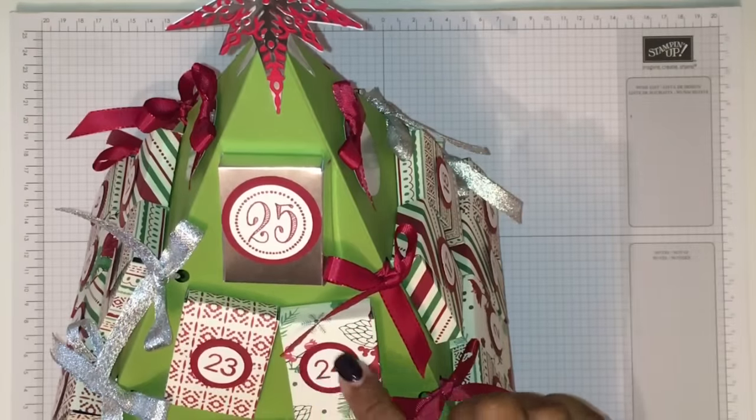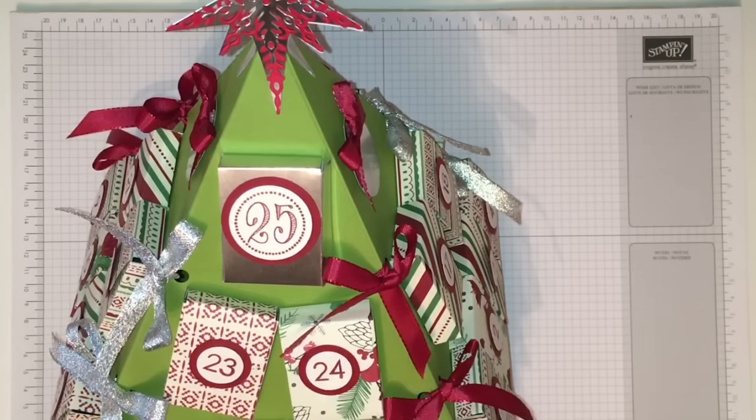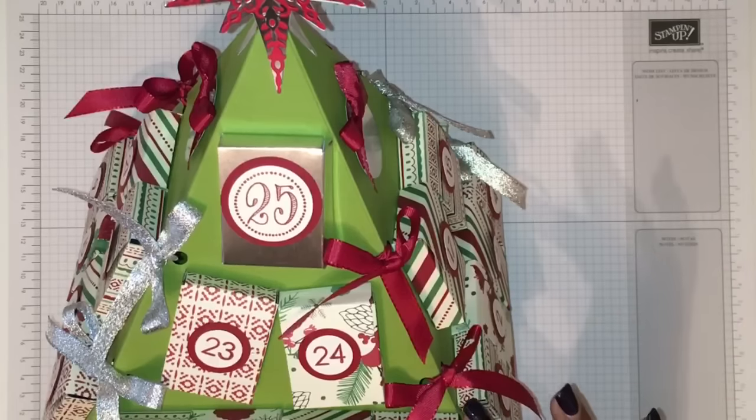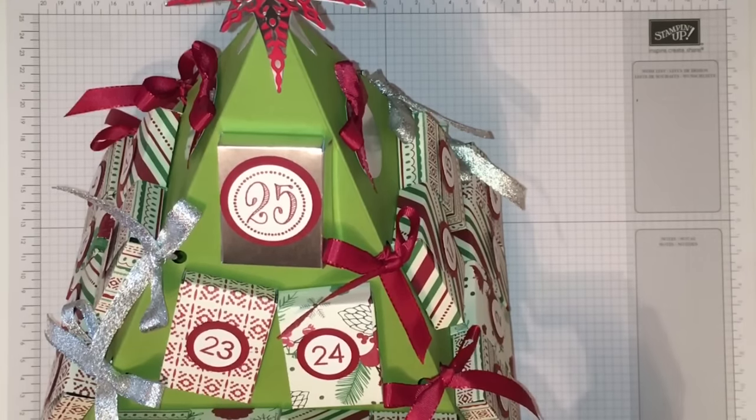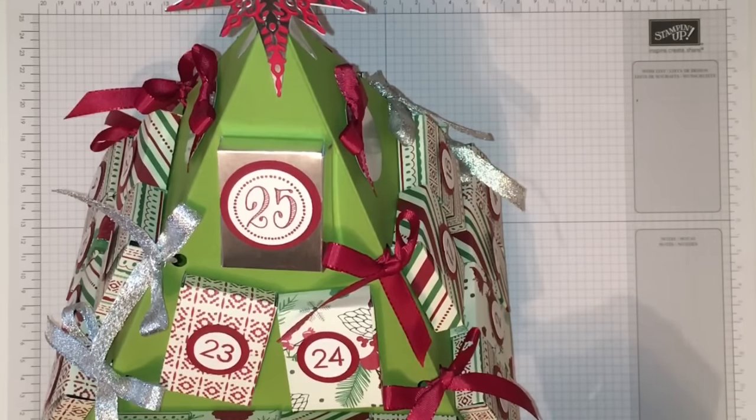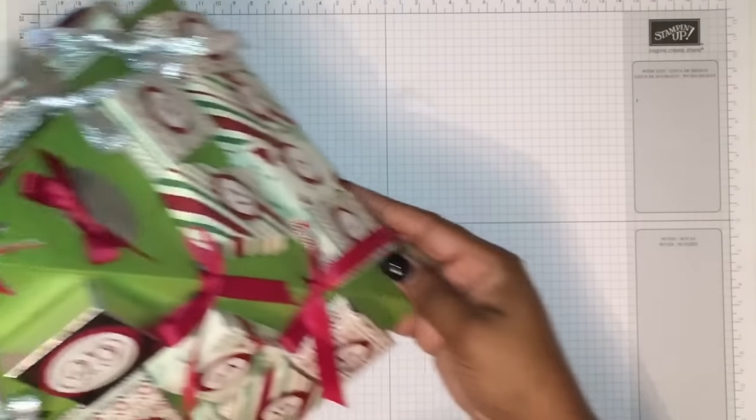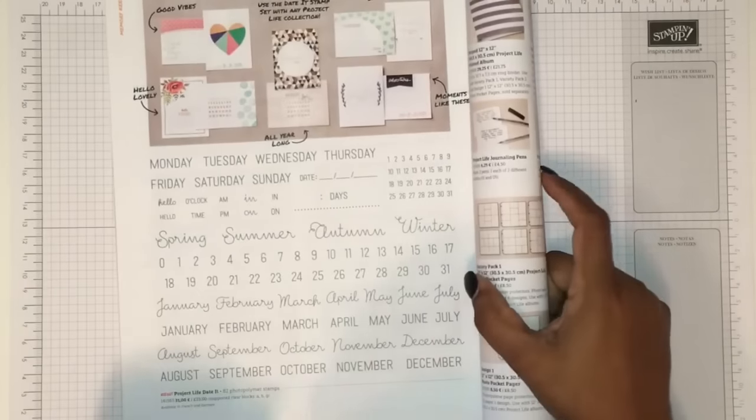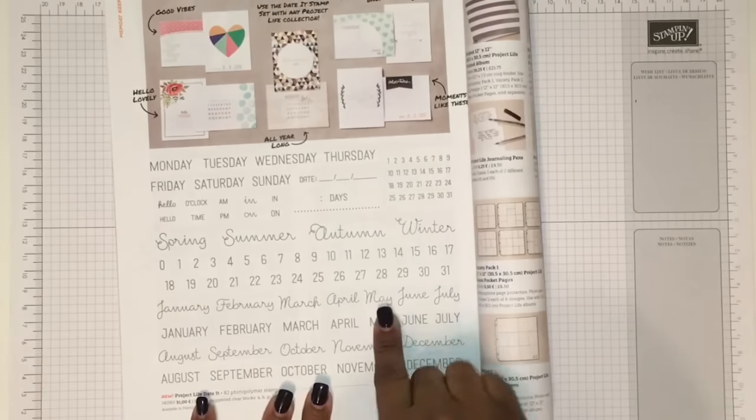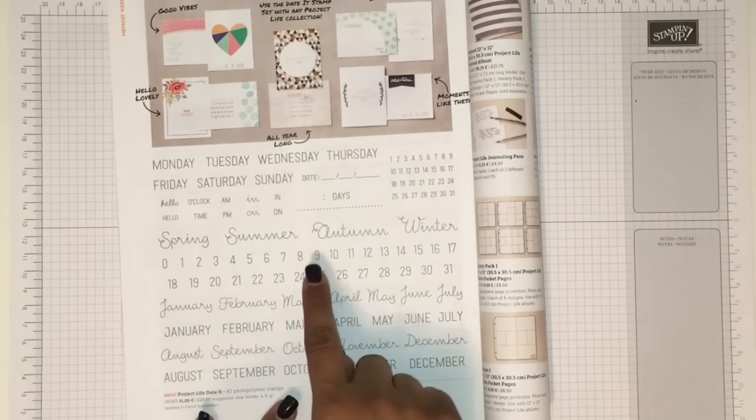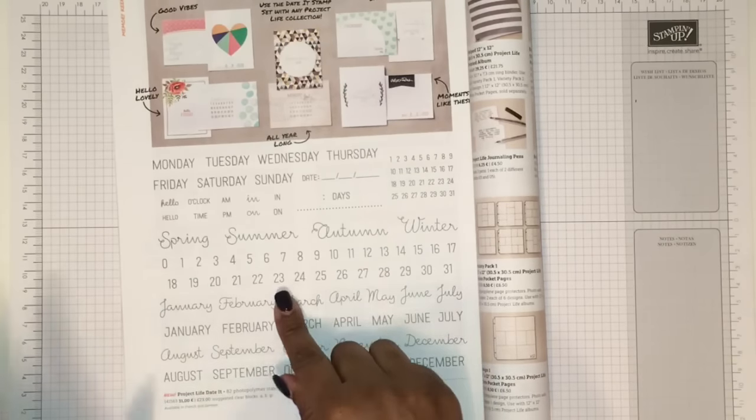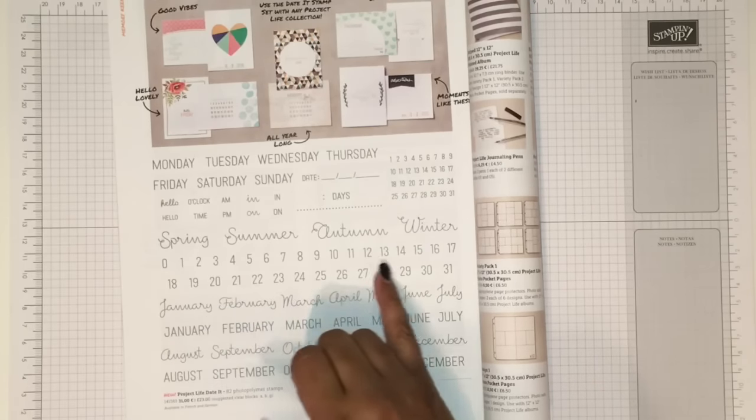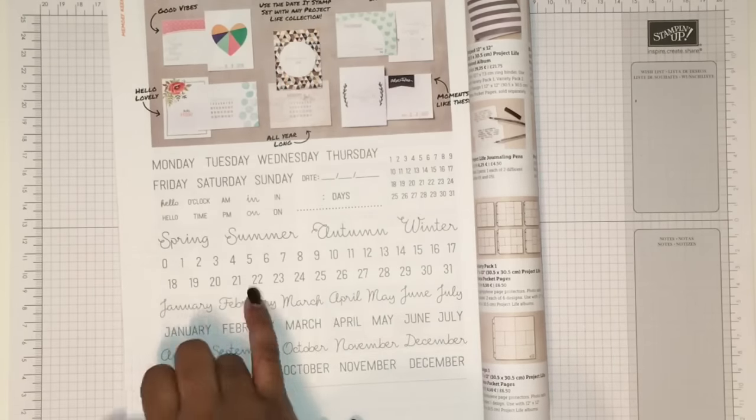I've used an old stamp set to do the numbers for mine with the exception of 25. I will show you in a bit, but there is a stamp set in our annual catalog called Project Life. It's Project Life Dated, which has the numbers even easier than the ones that I had to do, because the ones I had to do, I had to put them together. But here you could actually stamp each of the numbers already ready for you.